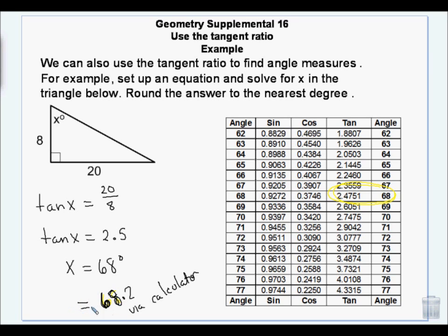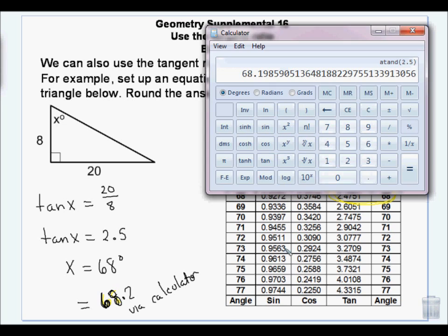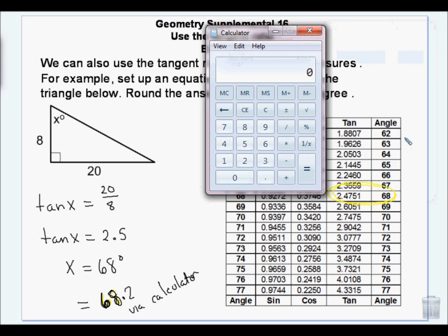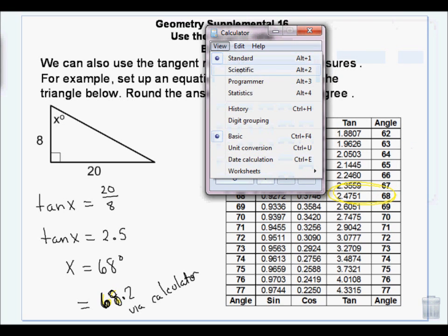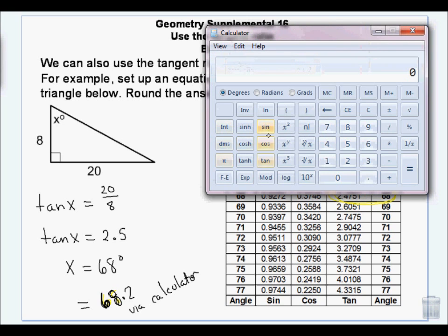So if we don't have calculators, we can use this table, right? Yeah, or you can use the, if you have a computer. So normally when you pull up the computer, it looks like that, right? If you go view scientific, it gives you sine, cosine, and tangent. And then if you have like a situation like this where you have a tangent of x or sine of x or whatever, you press the inverse button.